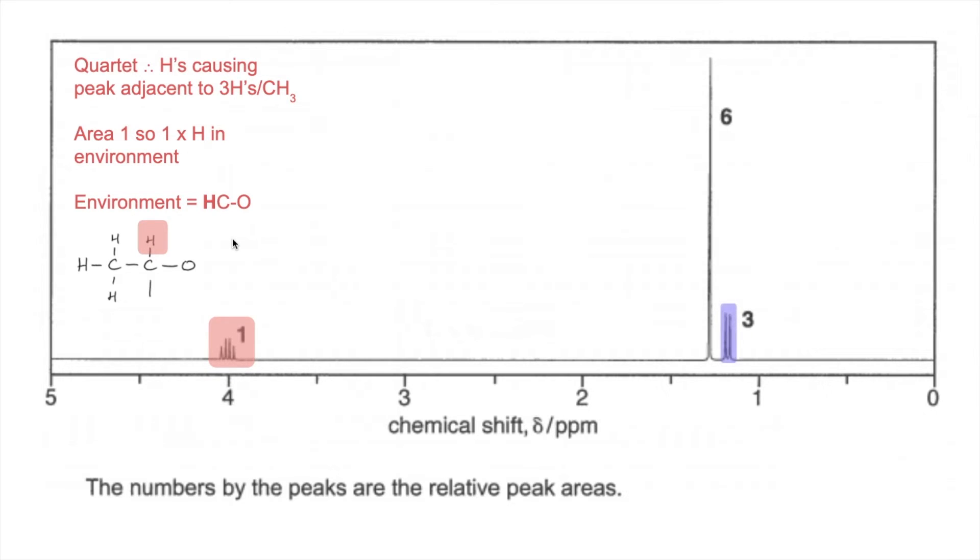So that signal there is a doublet. So the protons causing the peak must be adjacent to one hydrogen. So that's what I was saying there. The area is 3, so it must be a CH3. And the environment is an HCR environment. So that all sort of ties together. So that's just the confirmation of that.